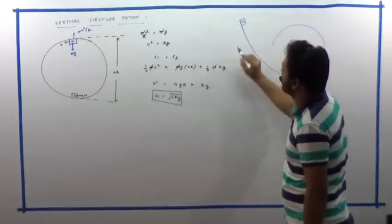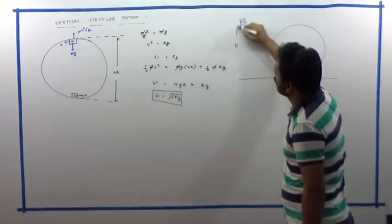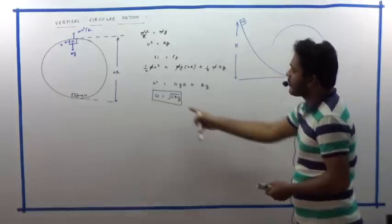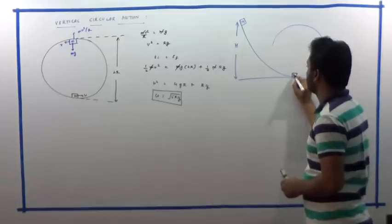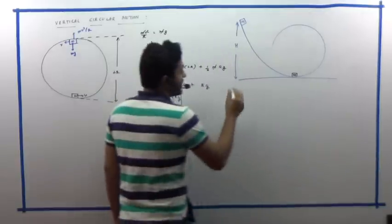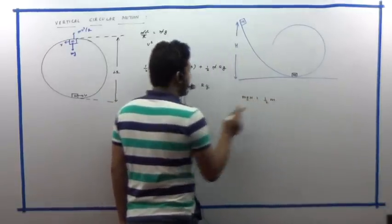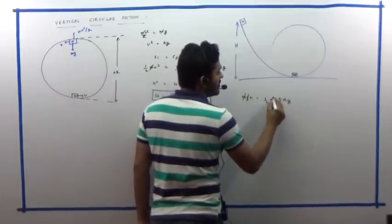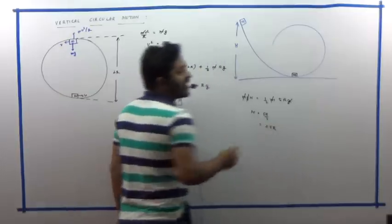Final example: from what height must a particle be dropped so that it completes a vertical circular path of radius R? We need u = √(5gR) at the bottom of the loop. Applying work-energy theorem from the drop height h to the bottom: Mgh = ½Mu² = ½M·5gR, so h = 5R/2 = 2.5R.